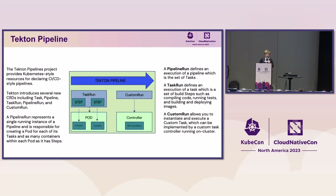Tekton Pipelines is a project that provides Kubernetes-style resources for declaring CI/CD-style pipelines. It is mainly constructed with a few main CRDs, namely Task, Pipeline, TaskRun, PipelineRun, and CustomRuns. These are the major CRDs we use within Tekton Pipelines.